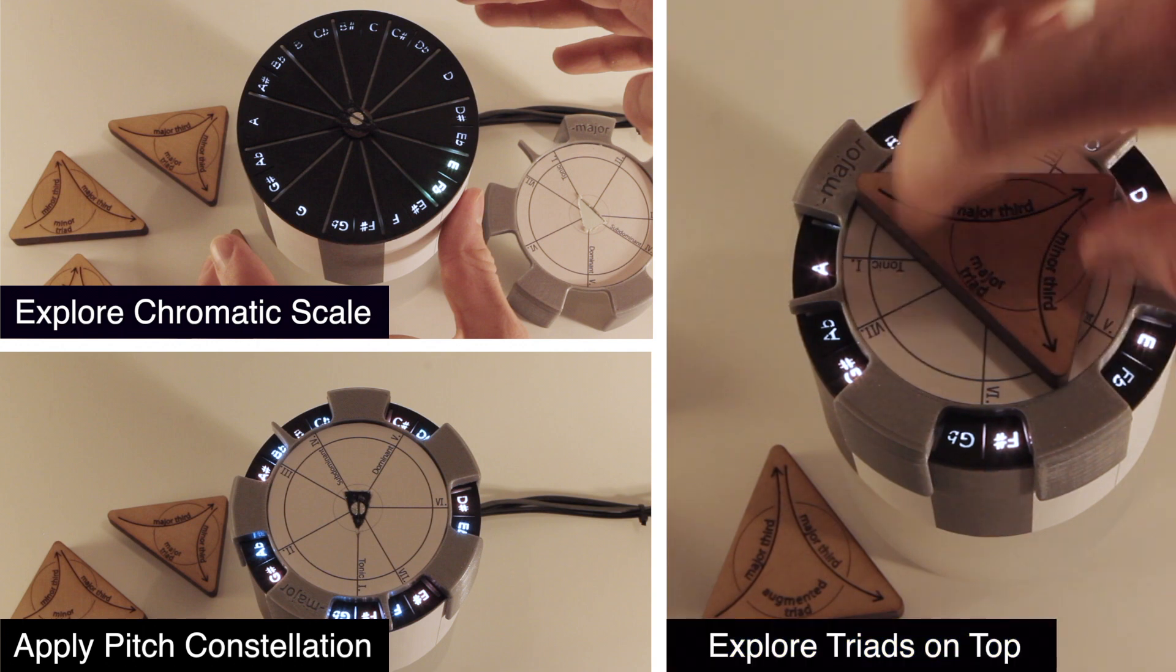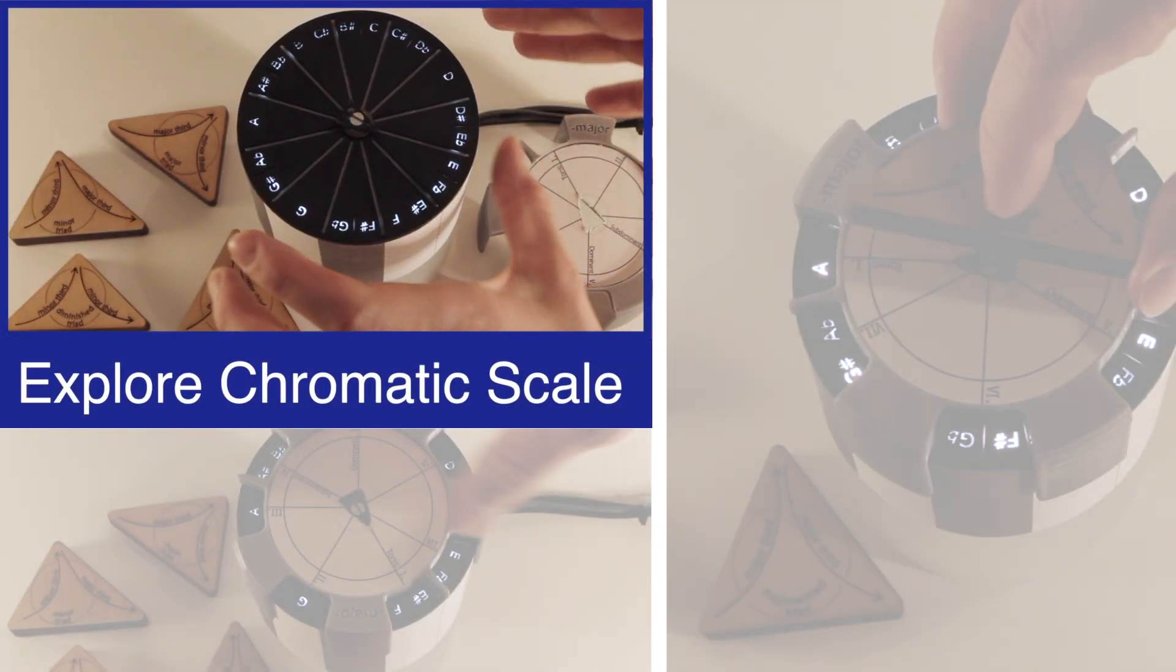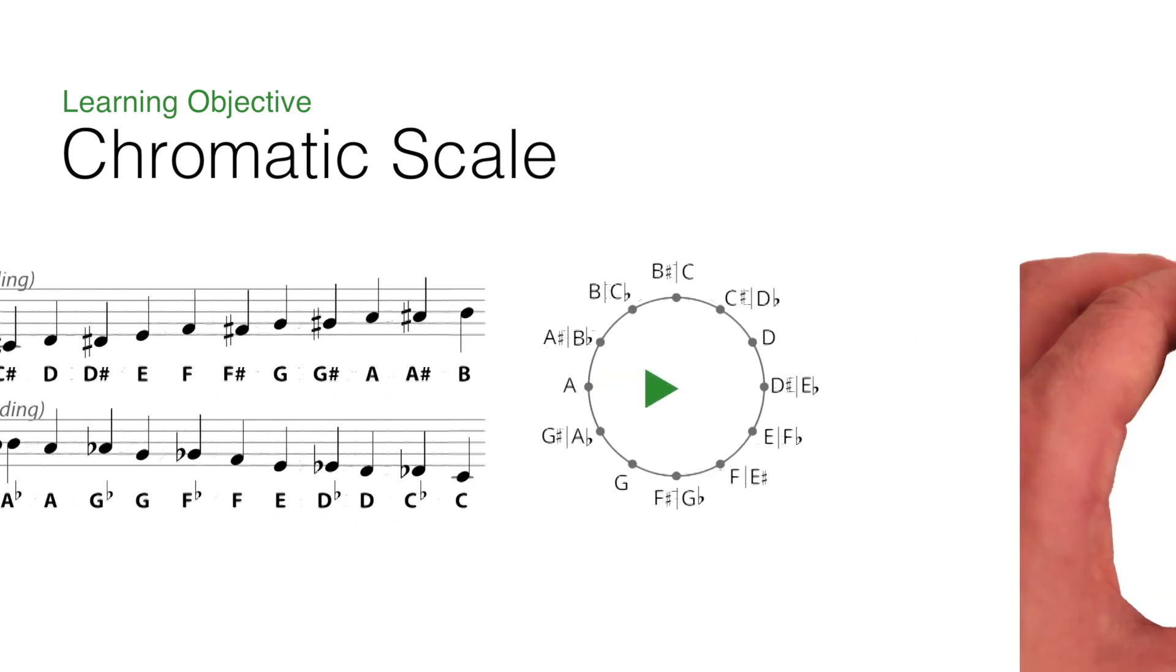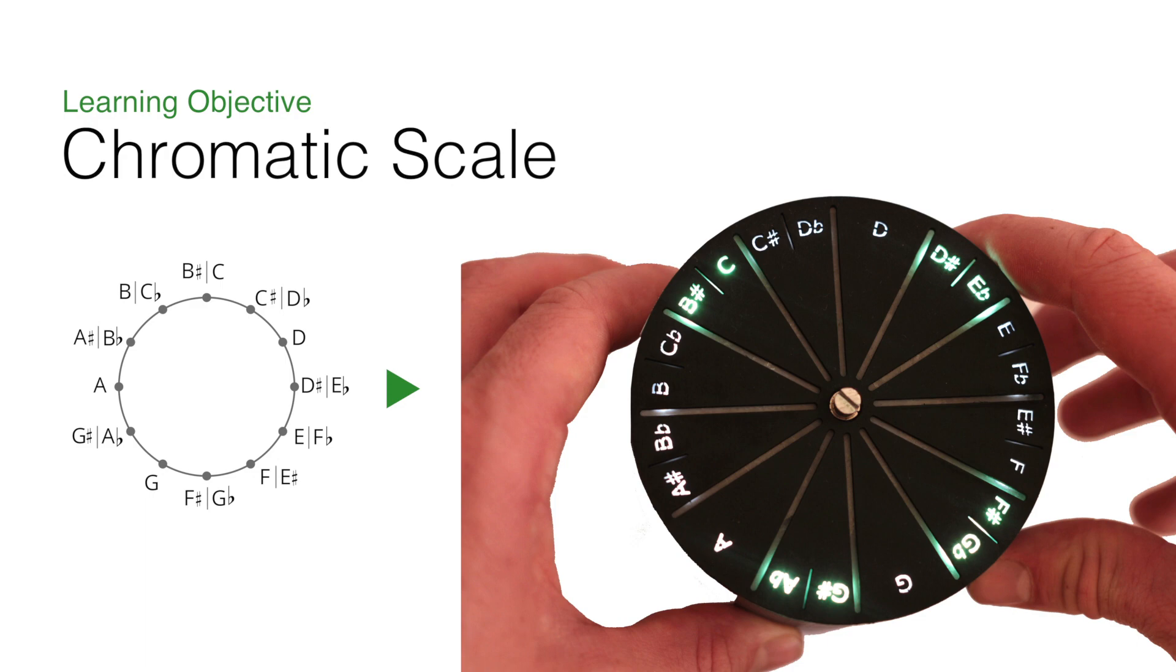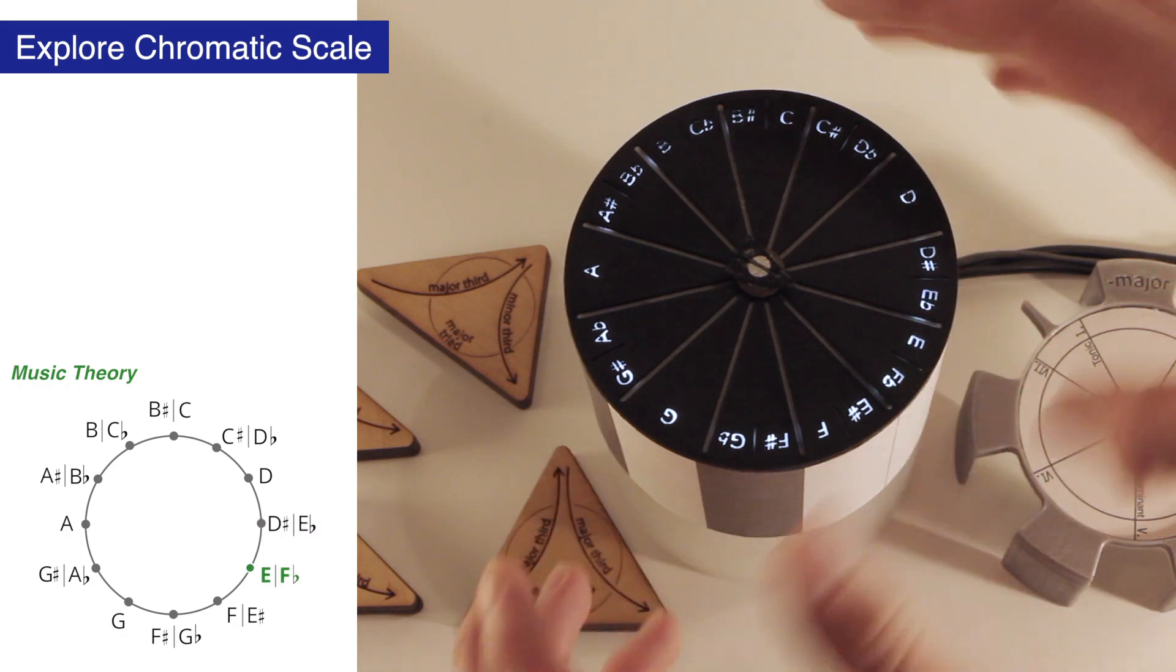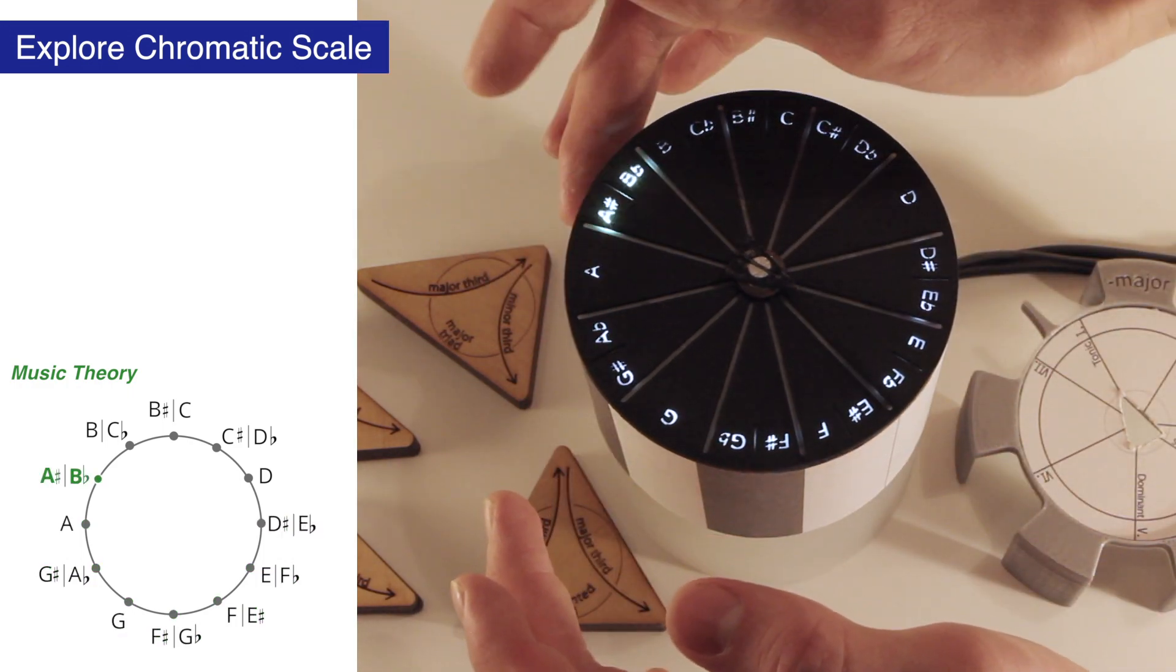In the following, we will describe each part in more detail. The chromatic scale is an important basis for music. For our approach, we use the circle visualization of the chromatic scale to build an interactive scale cylinder. The pupil can touch every note. The respective note name lights up and the corresponding sound is played.